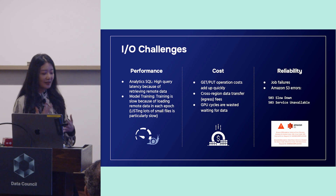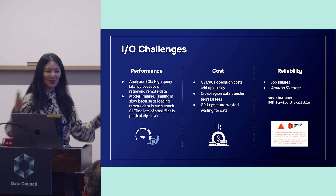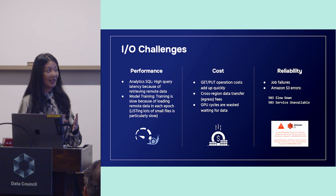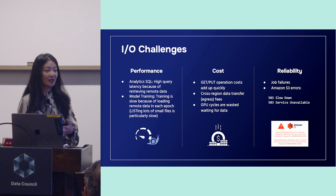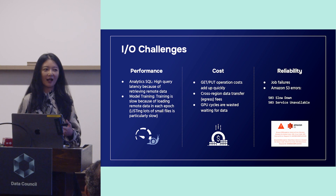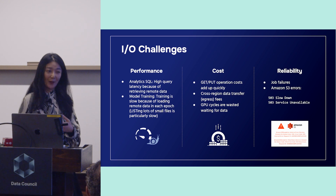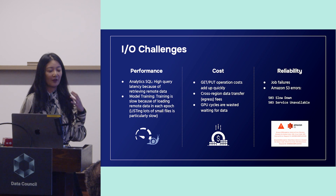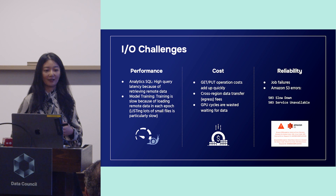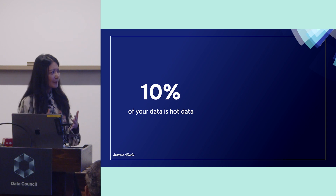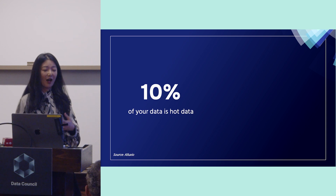I'm going to give one solution — just one of many huge optimizations you might consider. It's based on data I've observed working at Alluxio, an open-source company. We work with large internet companies including Uber, Meta, TikTok, and Expedia, and we have insights into their I/O patterns — reads, writes, number of files, operations, file types and sizes. The key number is: only 10% of your data is hot, meaning not all data is frequently accessed. We call this hot data or the working set.